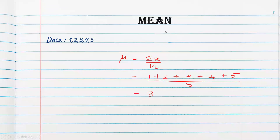Let's quickly understand that now. First let's start with the mean. We are not trying to understand the definitions — that is not really important. Mean is nothing but the average of all the observations. What is meant by that? Sum of all the observations divided by the total number of observations.